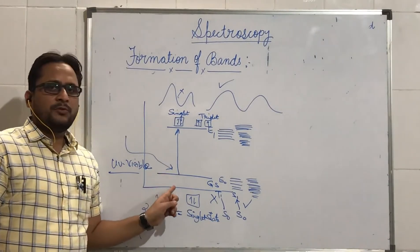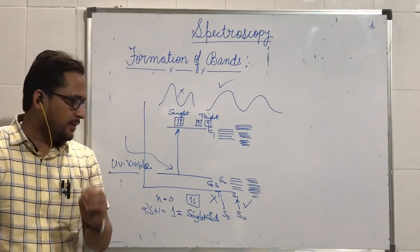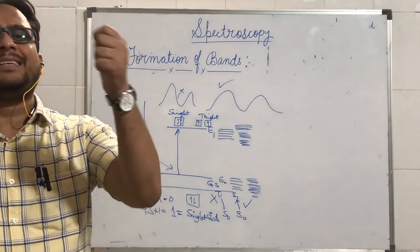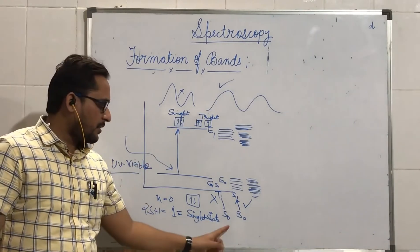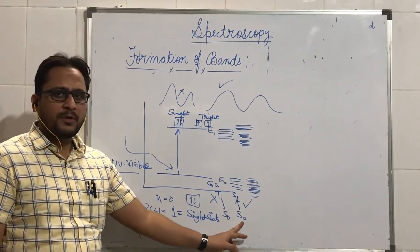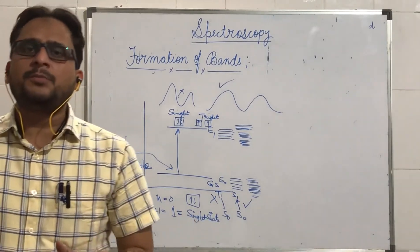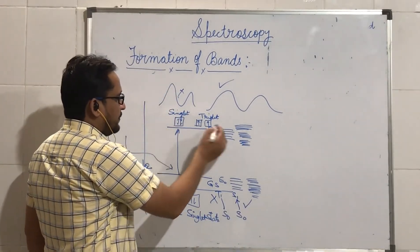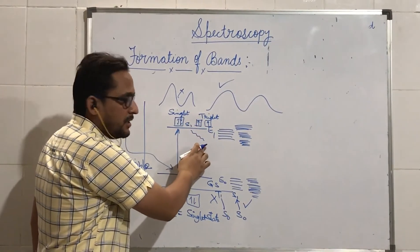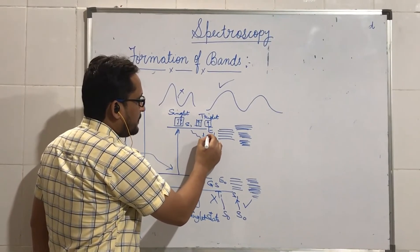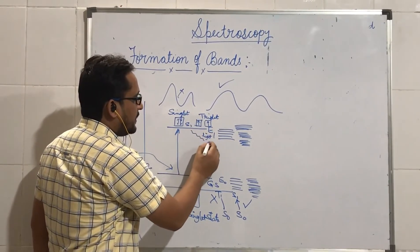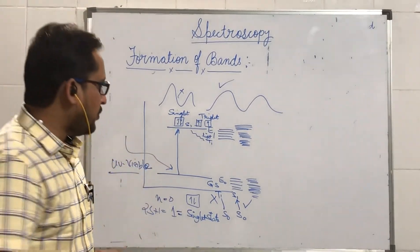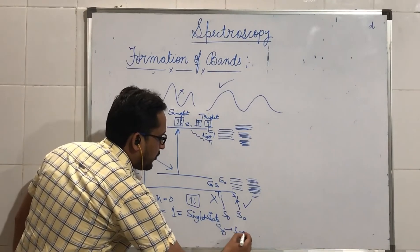Upon absorption of energy of a particular wavelength, electrons from the ground state are excited from ground singlet S0 to excited singlet S1. They never go directly from S0 to T1. Once promoted from S0 to S1, since the singlet excited state is a short-lived state, there occurs a release of energy. From S1, energy is sometimes released in the form of light and the state changes to T1. But electrons can never go to T1 directly from S0 — they can only go from S0 to S1, and then from S1 to T1.